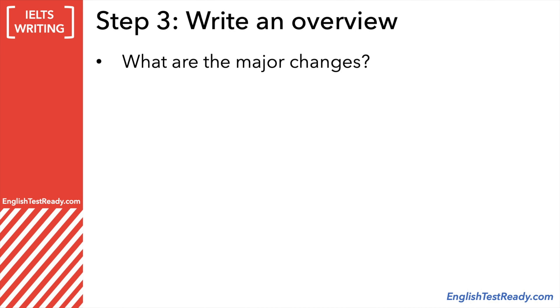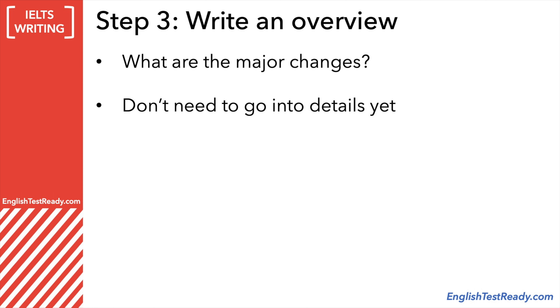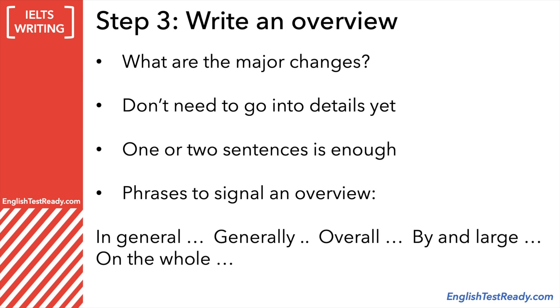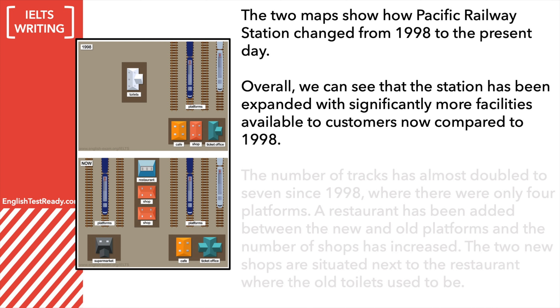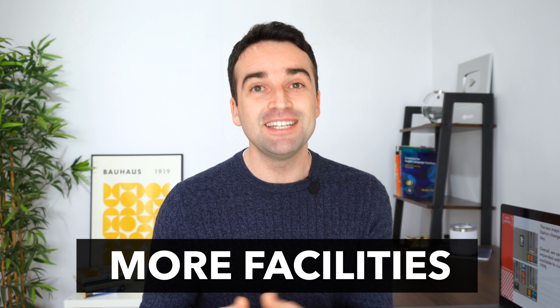Here are some things you can consider for your overview. First: what are the major changes? You don't need to go into details just yet, but describe the major changes — did something expand or grow or shrink? Are there more buildings, more parks? What's the purpose of the changes? You can use phrases to signal to the examiner that you're writing an overview, such as: in general, generally, overall, by and large, on the whole. Here's my example: Overall, we can see that the station has been expanded with significantly more facilities available to customers now compared to 1998. The overview is simply that the station expanded to allow more facilities for customers — you don't need to go into more details yet.